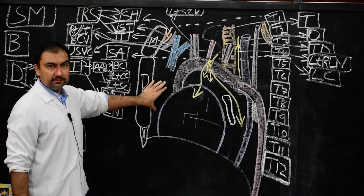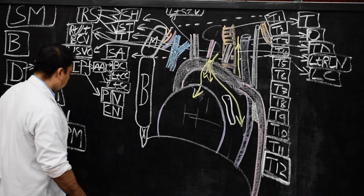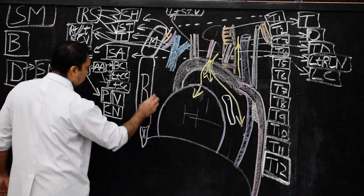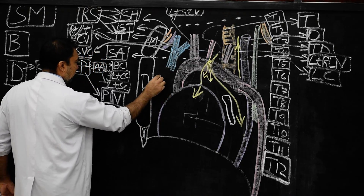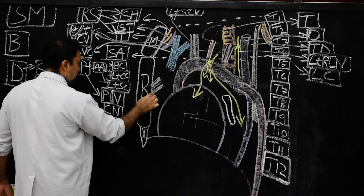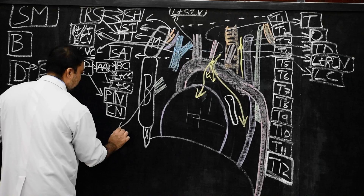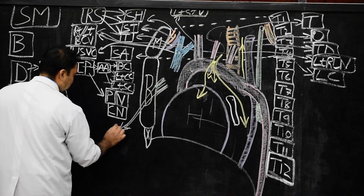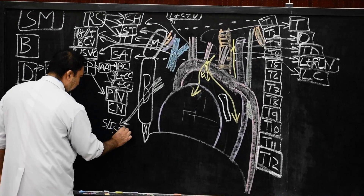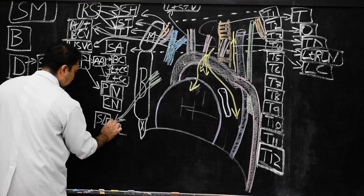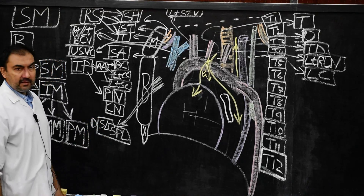In the anterior mediastinum, we have the following structures. First, we mark here the two sternopericardial ligaments — superior and inferior sternopericardial ligaments. This is structure number one in anterior mediastinum.